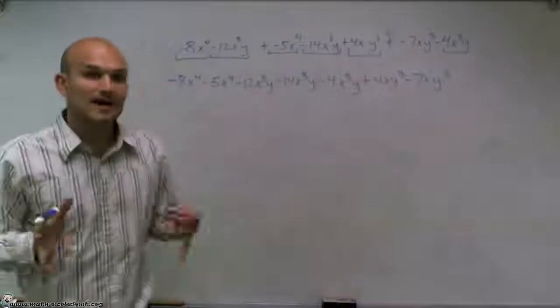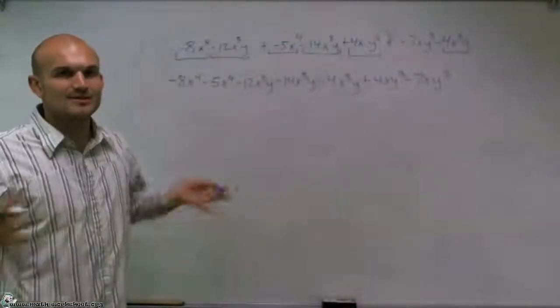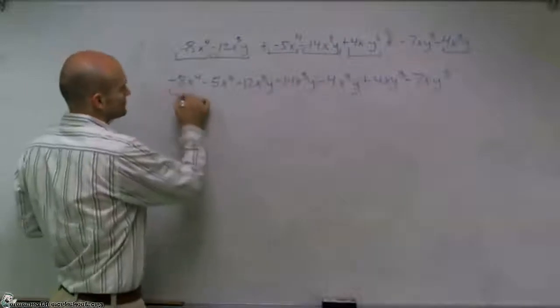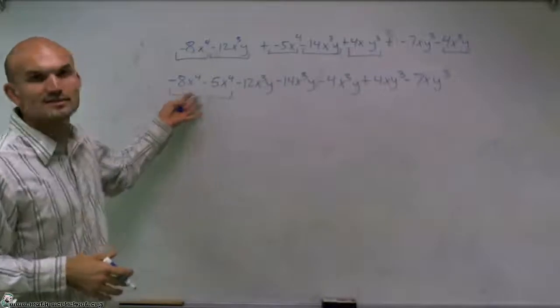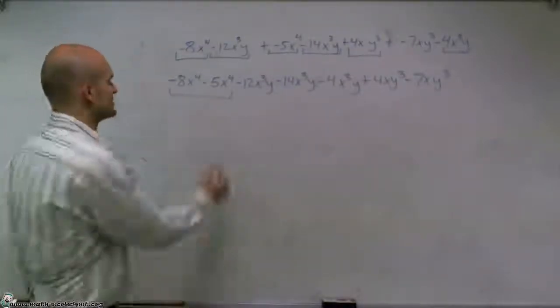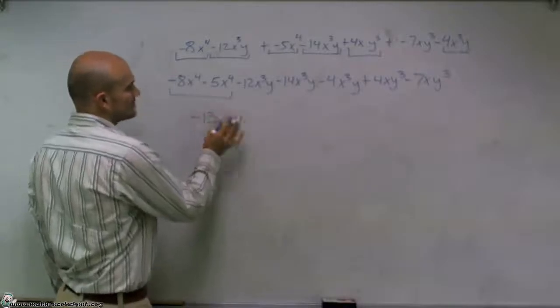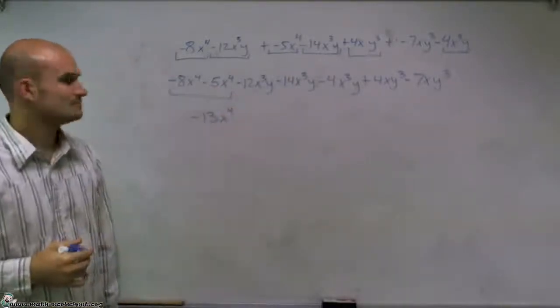So now that I have everything arranged together, what I can simply do is just combine them as they are. So negative 8x to the fourth minus 5x to the fourth. You can just think of these as simple terms. You can have negative 8 minus negative 5. It's going to be negative 13, and your term remains the same.